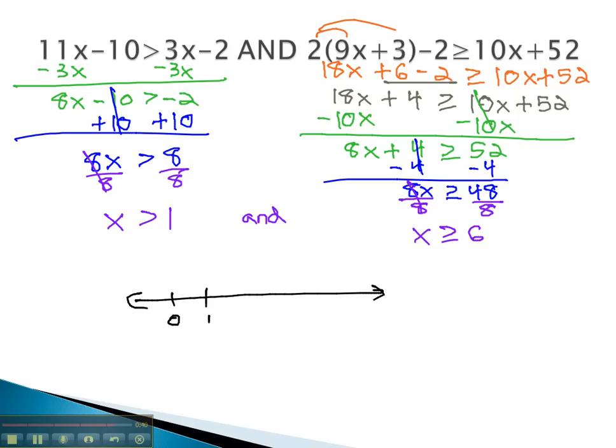Again, we can put these on a number line, starting with the first inequality at 1, open circle because it's just greater than, going bigger.